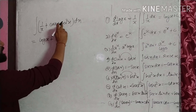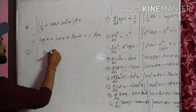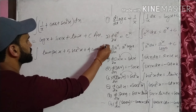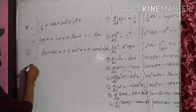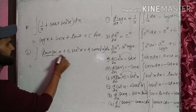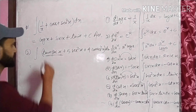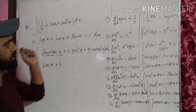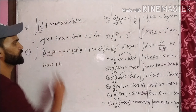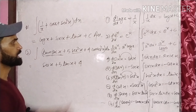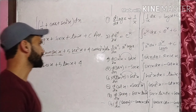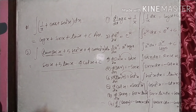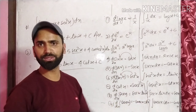एक और example: मान लो आपके पास है ∫(tan x · sec x + 5 sec²x + 4 cosec²x) dx। तो tan x · sec x, यह secant x की differentiation है, so its integration is sec x। 5 sec²x का integration 5 tan x है। 4 cosec²x का integration minus 4 cot x है। So the final answer is sec x + 5 tan x − 4 cot x + c।